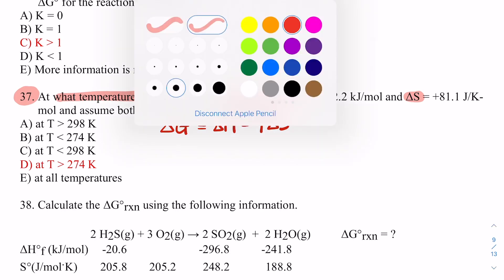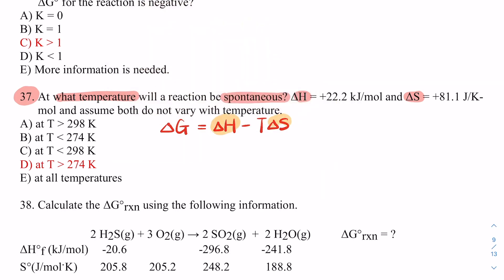I have this value, I have that value. I want to know the temperature when it's spontaneous. What do I need delta G to be for the reaction to be spontaneous? I need delta G to be smaller than zero. That's when the reaction is going to be spontaneous.